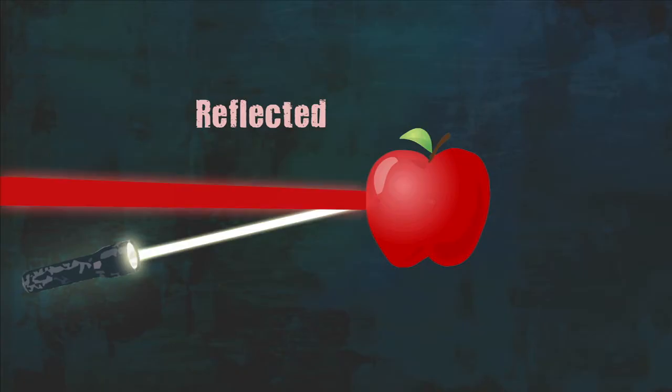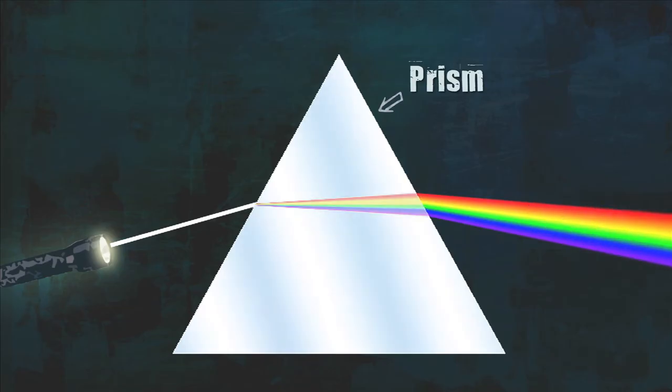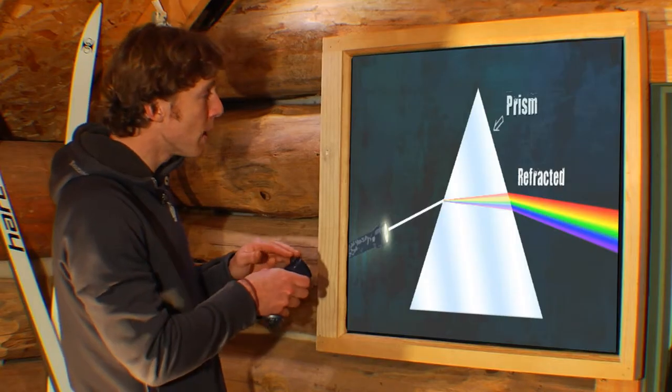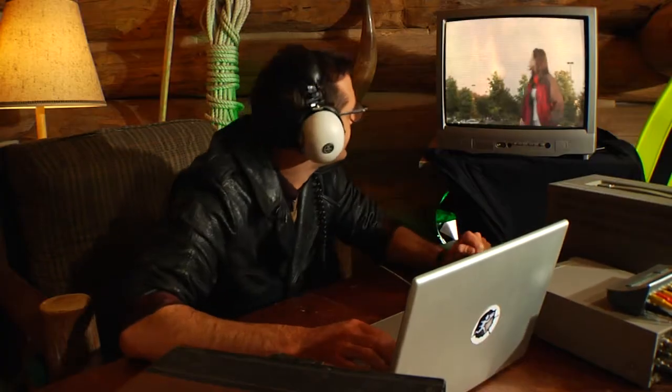Reflected means the light bounces off the surface of an object. When we shine white light through a prism, the colors get refracted, or bent, as they go through. Each wavelength is bent a different amount, so white light breaks up into all the different colors. Let's learn some more about refraction from Haley.